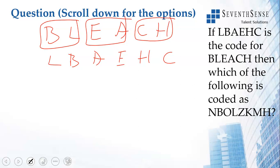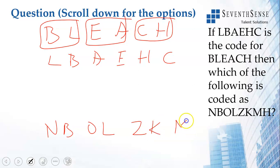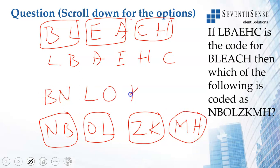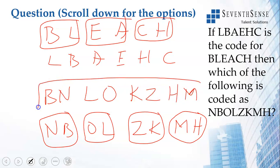Now, what is coded as NBOLZKMH. So, interchange these two letters. So, we have BNLOKZHM. So, this gets coded as this. Our answer will be BNLOKZHM.